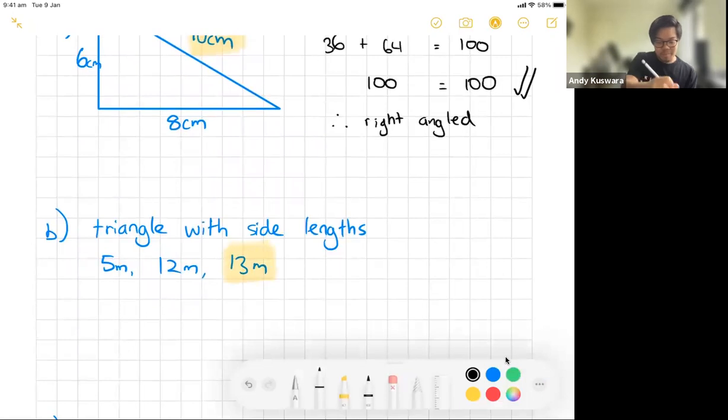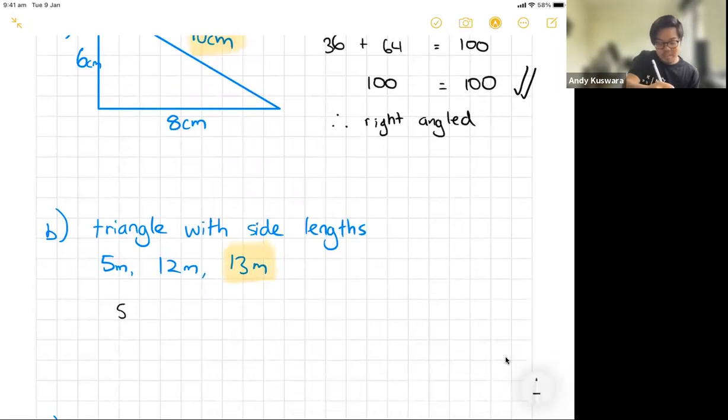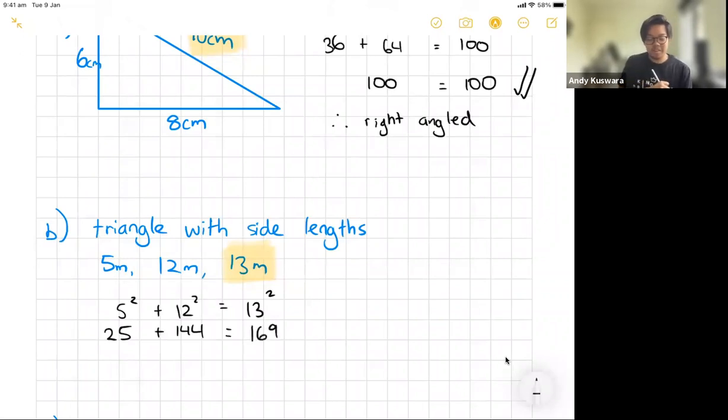So if I was to use my Pythagoras theorem, it would say that the two shortest sides squared, so 5 squared plus 12 squared, should equal 13 squared. Now let's just test it. 5 squared is 5 times 5 and that's 25. 12 squared, hopefully you guys know what 12 times 12 is. If not, it's 144. And then 13 squared, you can use your calculators, but I know it's going to be 169. Now let me just add up what I have on the left hand side: 25 plus 144, surprise surprise, it's actually 169.